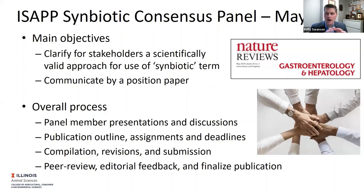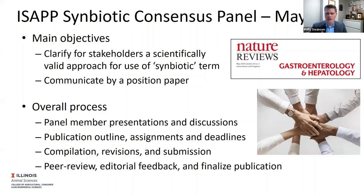The overall process was: we assembled the panel in late 2018 with emails so people could work on their topic area before meeting in person in May 2019. Every panel member had a presentation and a certain topic; we had discussions. By the end of the day we had a publication outline, and everyone had assignments. We had everything back in July. We compiled it — myself, Bob, Mary Ellen, and Glenn at the first stage — putting everything together and smoothing it out.